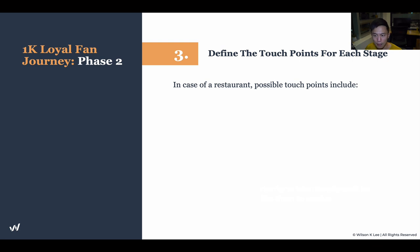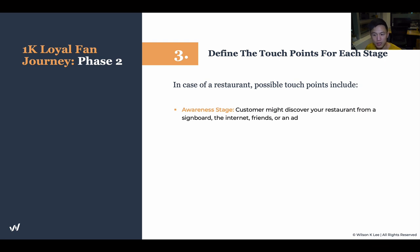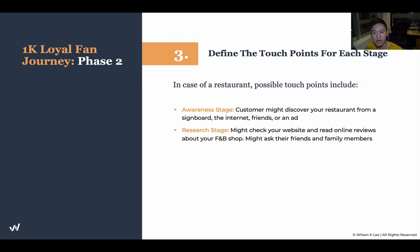Let me give you an example. In the awareness stage, some of the touch points might be your customers discovering you from a signboard, from the internet, from friends, or even an ad — these are all touch points of how your customers interact with your brand. In the research stage, they might check your website, your Instagram, your TikTok, or even come over to your restaurant to check you out, ask friends and family, or see how other foodies talk about your restaurant. These are all touch points in the research stage.